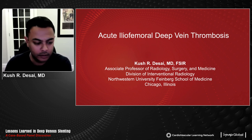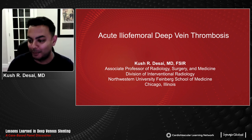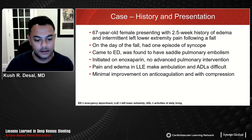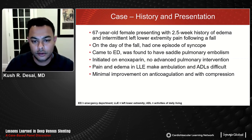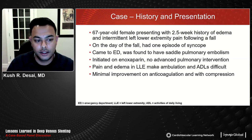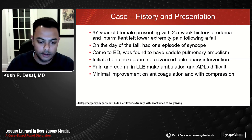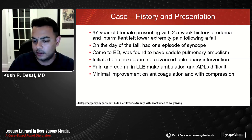Dr. Desai presents a successful acute iliofemoral DVT case. The patient is a 67-year-old female with a half-week history of edema and intermittent left lower extremity pain following a fall. On the day of the fall, she had an episode of syncope, came to the ED, and was found to have a saddle PE — started on apixaban, not submassive by ESC or AHA criteria. The focus shifted from the pulmonary embolism to left lower extremity pain and edema making ambulation and activities of daily living very difficult, with minimal improvement on anticoagulation and compression.